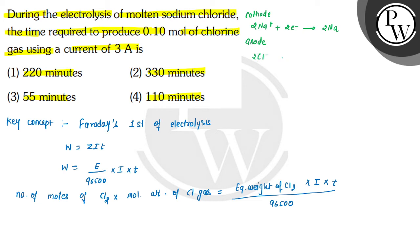And at anode, 2Cl- will be converted into Cl2 and 2 electrons will be released. So here Cl- oxidation state was -1 and Cl2 has reached 0, so from -1 to 0, the oxidation state has increased. So the net reaction is 2Na+ plus 2Cl- will form 2Na plus Cl2.